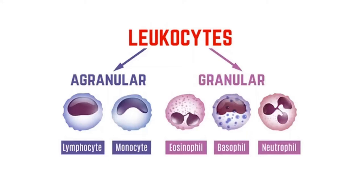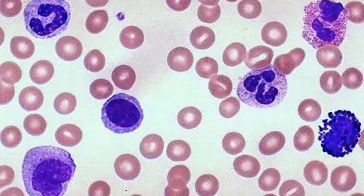Leukocytes are of two types: agranular and granular. Lymphocytes and monocytes are agranular, and eosinophils, basophils, and neutrophils are granular. These cells are mainly classified based on the granules present in them and also based on the lobes in the nucleus. The leukocyte count is critical to assess inflammation, infection, allergy, and malignancy.